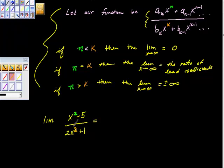And we see that they're equal, so I'm going to go down my chart and say, well what happens if they are equal? And it says if n is equal to k, then the limit as x approaches infinity is equal to the ratio of the lead coefficients.